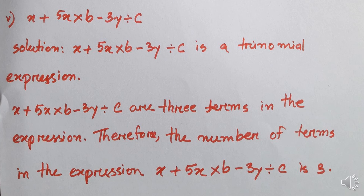Number 5: x plus 5x into b minus 3y divided by c. Solution: x plus 5x into b minus 3y divided by c is a trinomial expression — this expression has three terms: x, 5x into b, and 3y divided by c. Therefore, the number of terms in the expression is three.